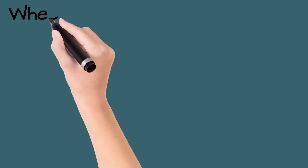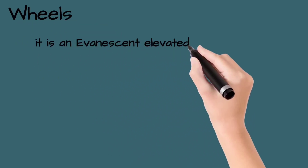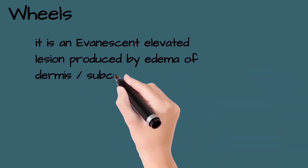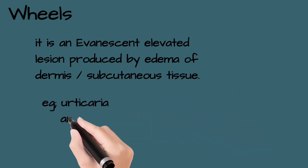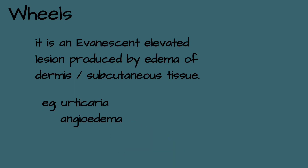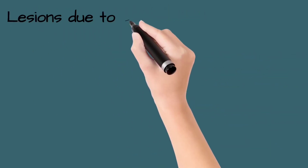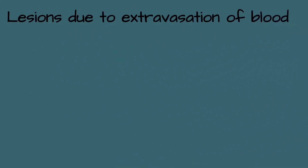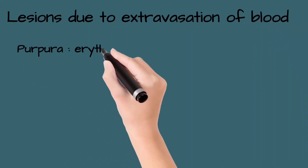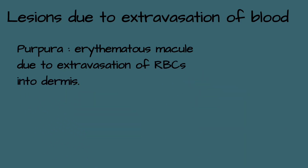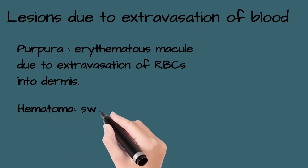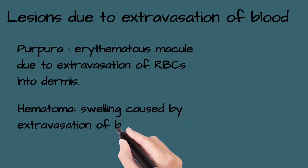A wheal is an evanescent lesion produced by edema of the dermis or subcutaneous tissue. It could be urticaria or angioedema. Lesions due to extravasation of blood are purpura and hematoma. Purpura is an erythematous macule due to extravasation of RBCs into the dermis — they are not blanchable. A hematoma is a swelling caused by extravasation of blood.